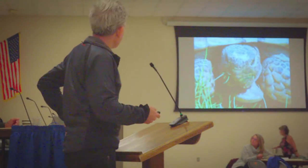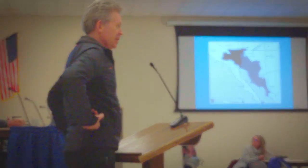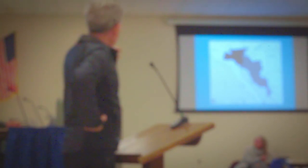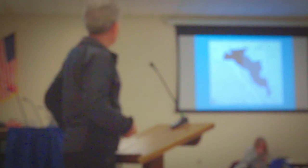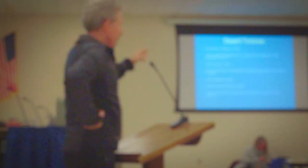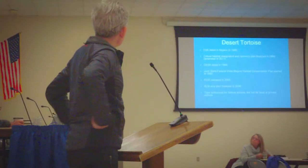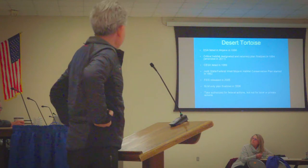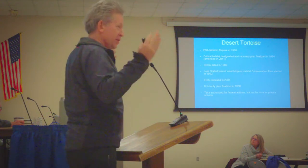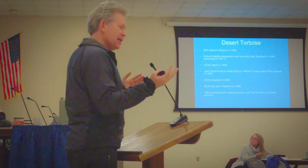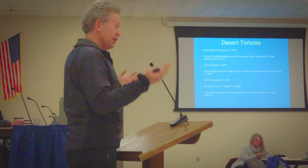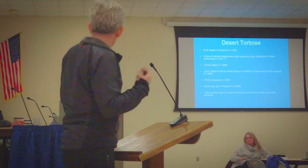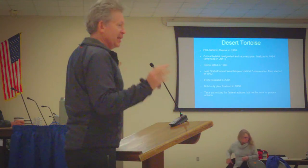The desert tortoise: there are two species — a Mojave population and a Sonoran population. The Mojave species is listed under both state and federal law; the Sonoran is a continuous battle to get it protected. The tortoise was ESA listed in 1990, state listed in 1989 — 30 years ago. Once it was listed, that triggered numerous things, both Section 7 obligations and the take prohibition. So state, federal, local agencies, and counties all realized they needed to deal with it.